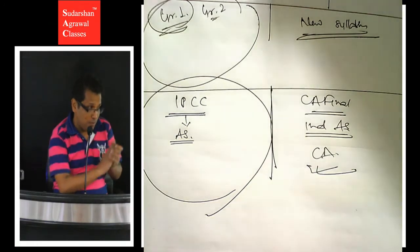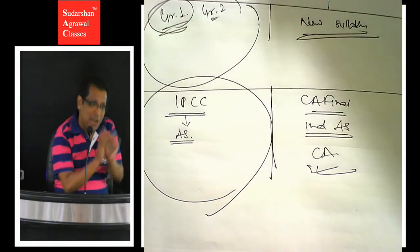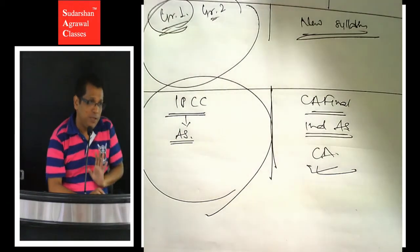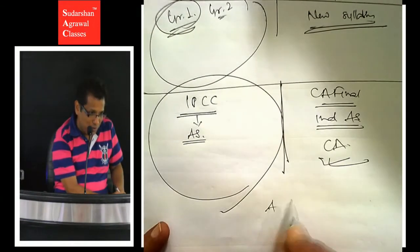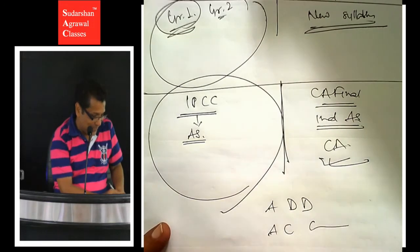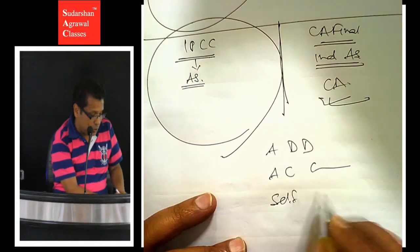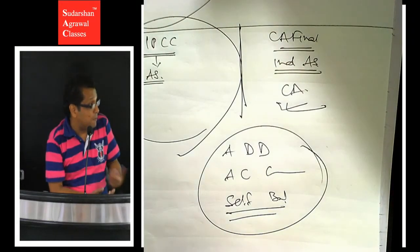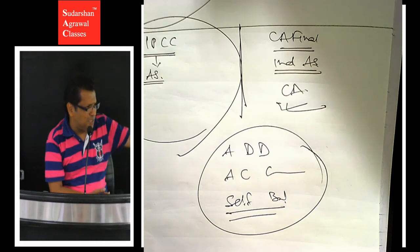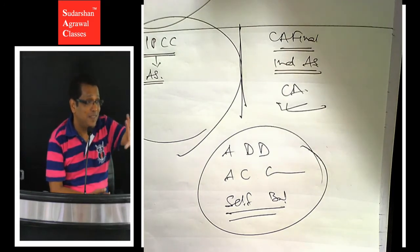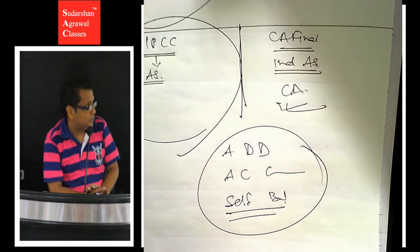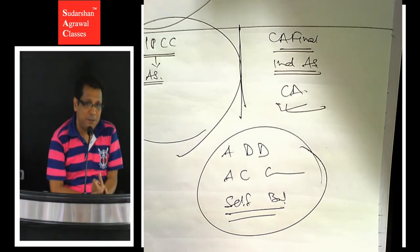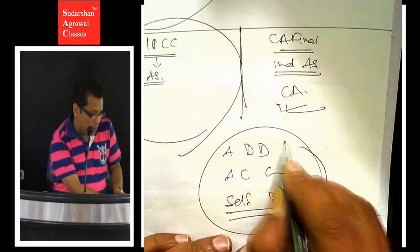Now how is syllabus churning? I am talking about accounts paper. Average due date, account current, self-balancing ledgers - these topics are out of syllabus in IPCC, no longer existing.